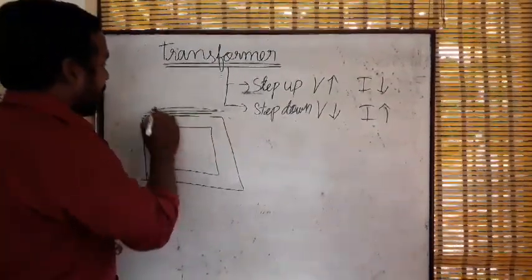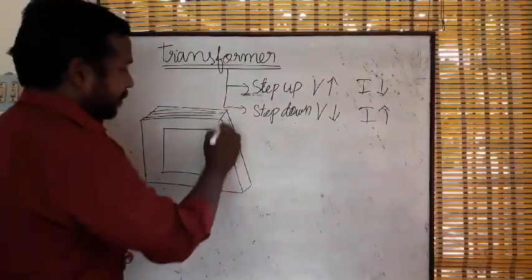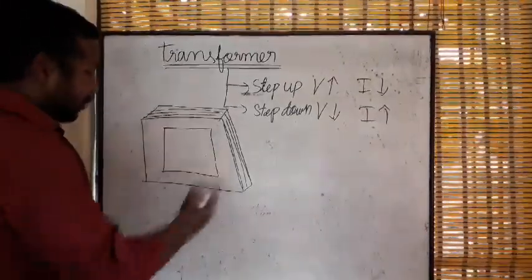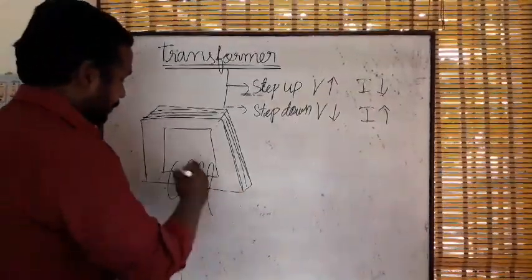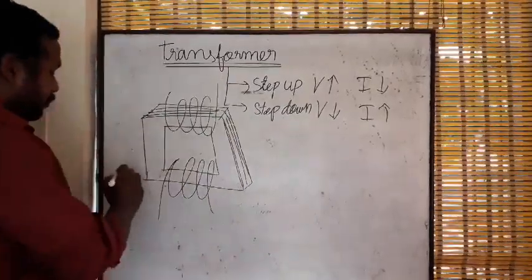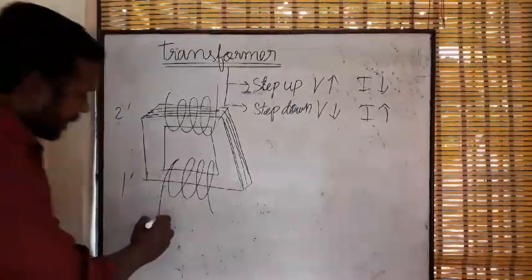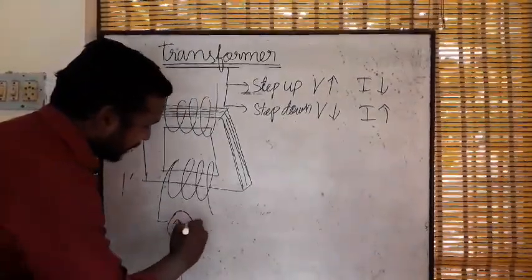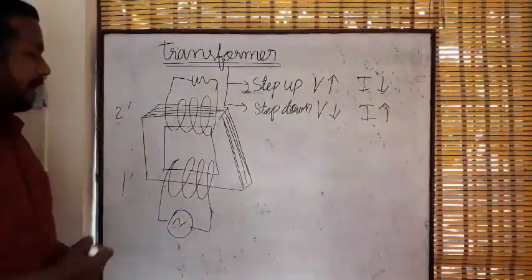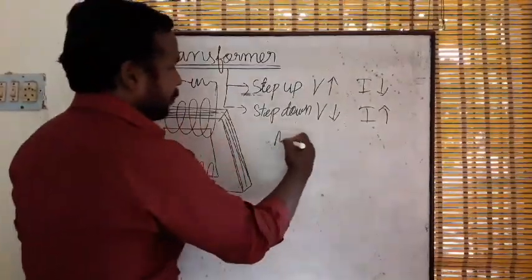You may ask why we use this laminated sheet shape — it is to reduce the eddy current. There are two coils: one on this side and another on the other side. One is the primary coil and the other is the secondary coil. We give the AC input at the primary coil and get the output from the secondary coil.